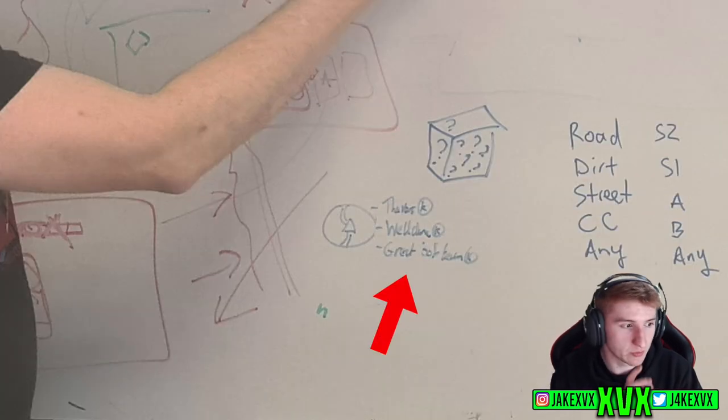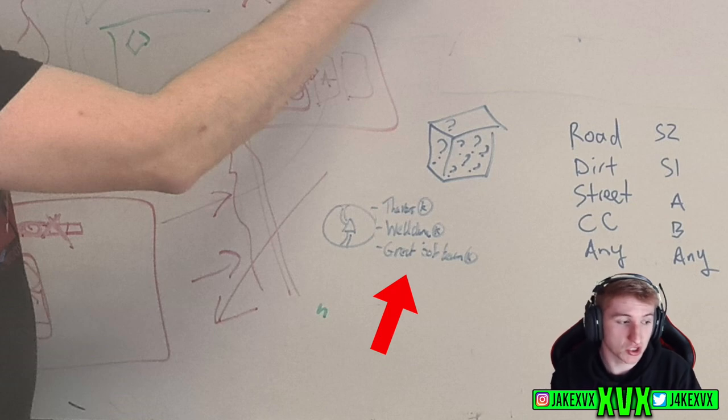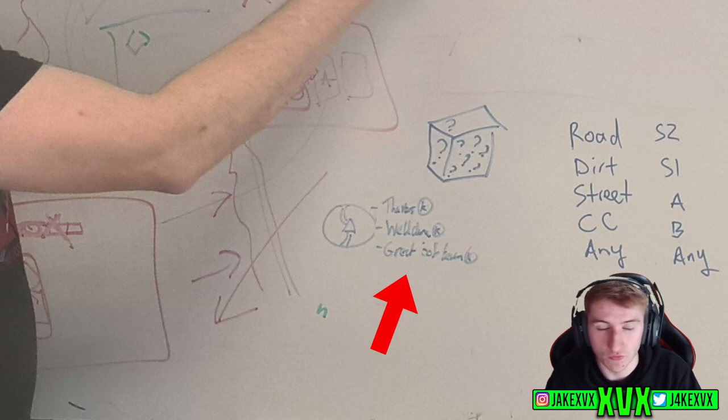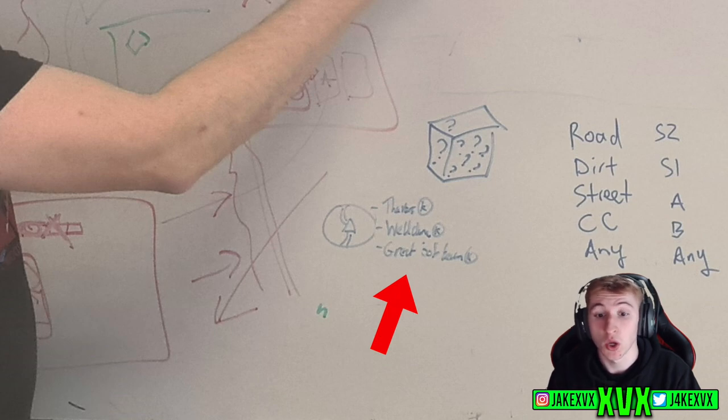A bit further to the left we have more quick chats by the looks of it. We have a circle which appears to be a map. You can see sort of your character driving around the road and then to the right of that we have three phrases which appear to say thanks, well done and great job team.